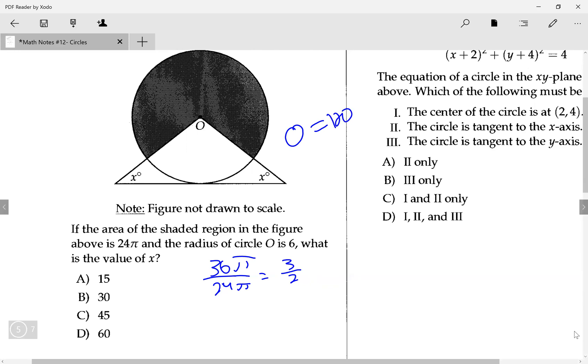And if O is equal to 120, then that means 2x is going to be equal to 60 because it's 120 + 60 has to equal 180. So that means x is going to be equal to 30, which is why B is the right answer there.